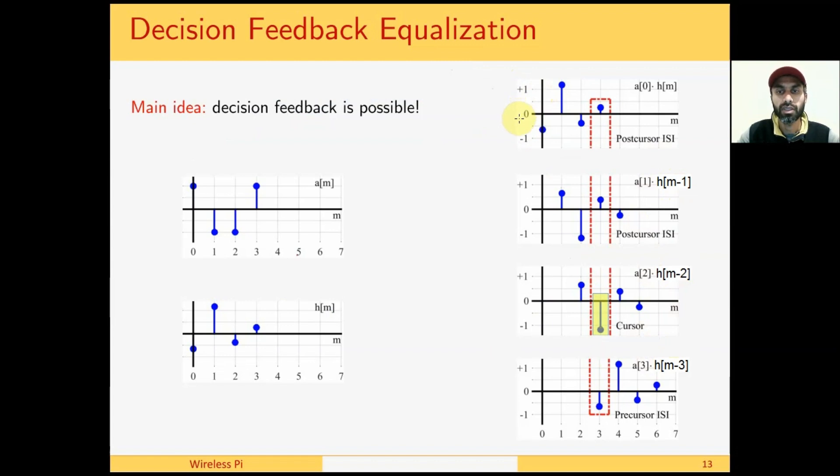This is what convolution does. Suppose our current time instant is m=2. Here, the inter-symbol interference arrives from symbol a(0), symbol a(1), and symbol a(3). The idea is that even if the channel response is known, we do not know a(3); therefore, we cannot do anything about it.